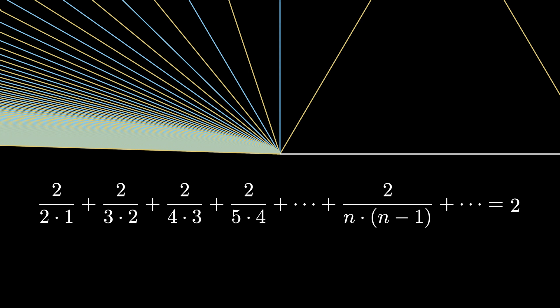Notice that each fraction on the left is 1 over n choose 2, where n choose 2 is a binomial coefficient or a triangular number. This means that the infinite sum where n ranges from 2 to infinity of 1 over n choose 2 is equal to 2.